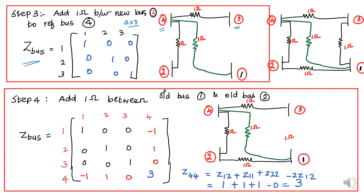Then step number 4: Add 1 ohm between old bus 1 and old bus 2. Here the order of the matrix is increased by 1, giving a 4x4 matrix. But the actual Z-bus matrix should be 3x3 only. Therefore, the last column element and the last row element must be eliminated.